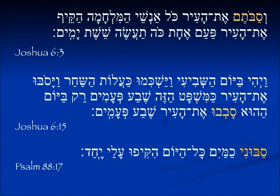In Psalm 88:17, we see the third person masculine plural with one bet, and it has a suffix on it that means 'me' — something they did to me. And they surrounded me — sabunikamayim — like water.